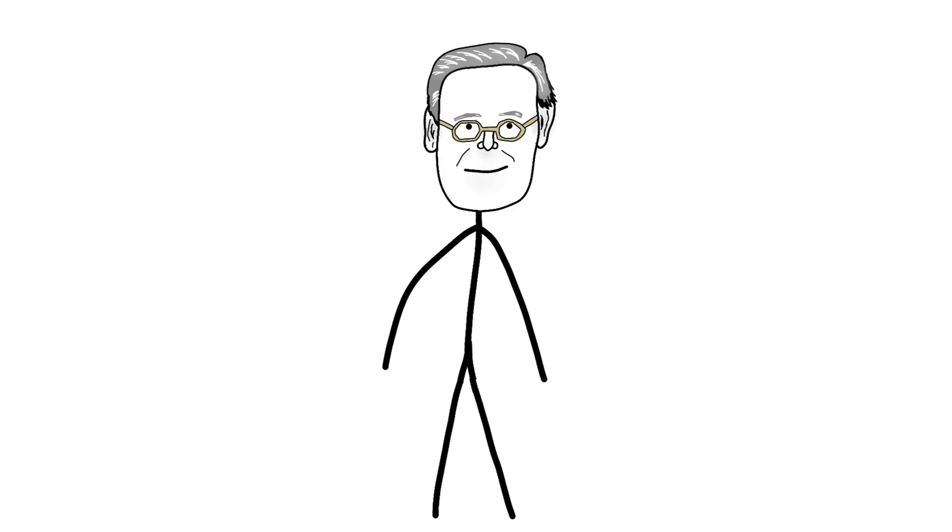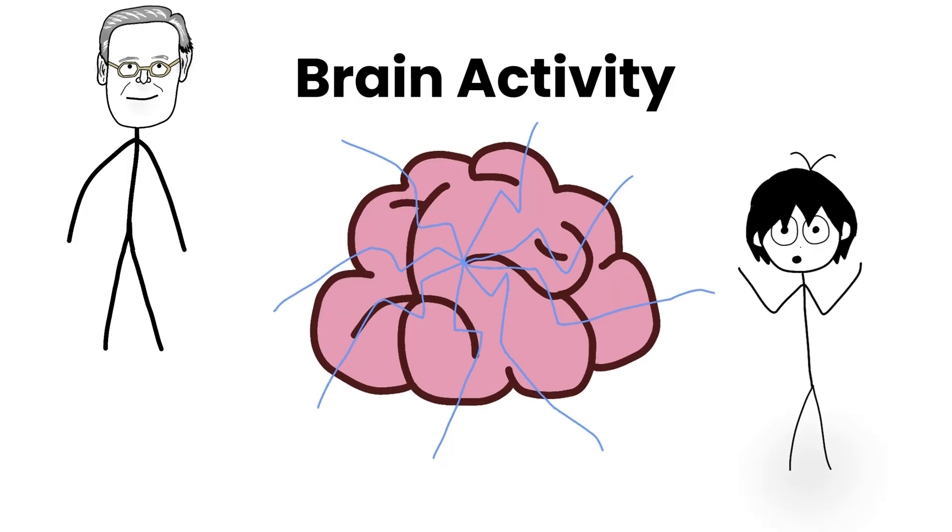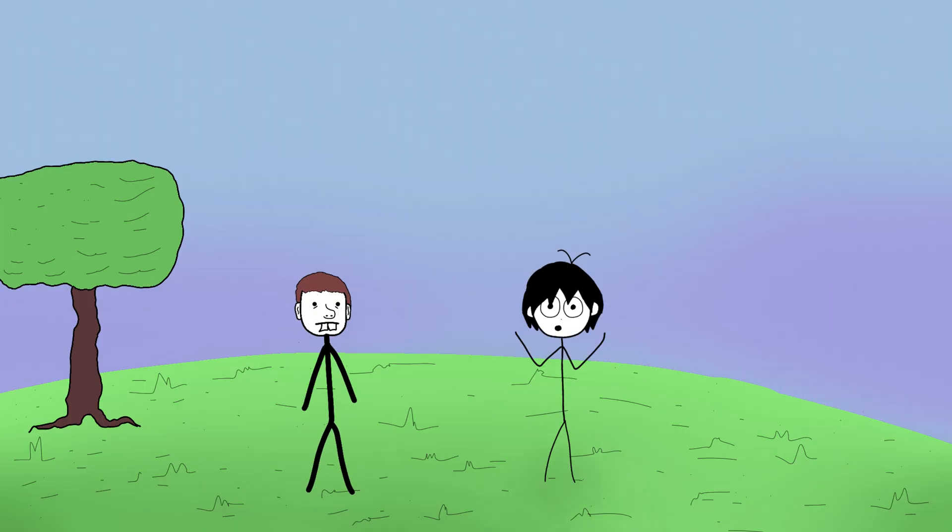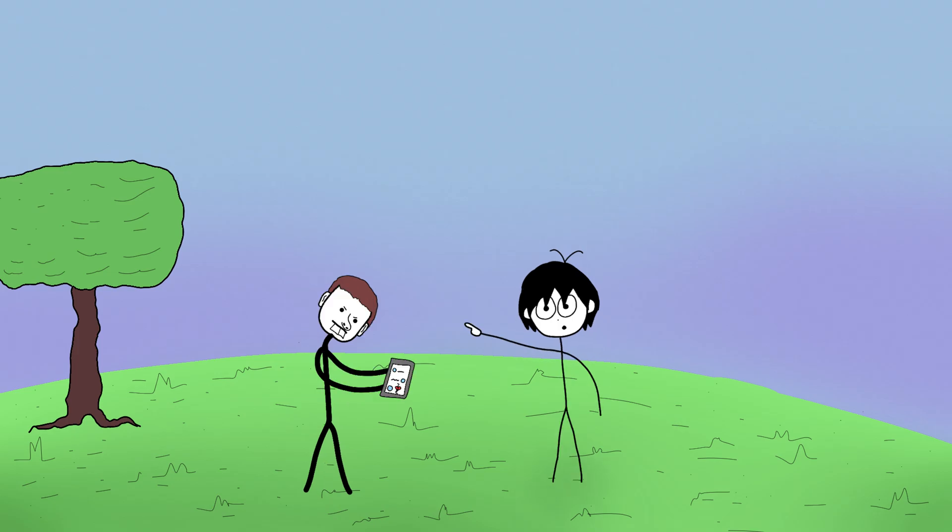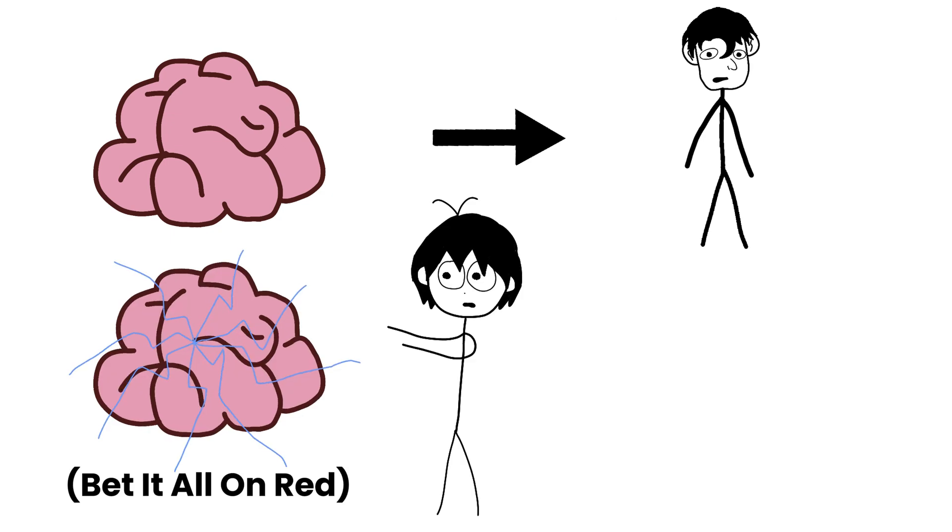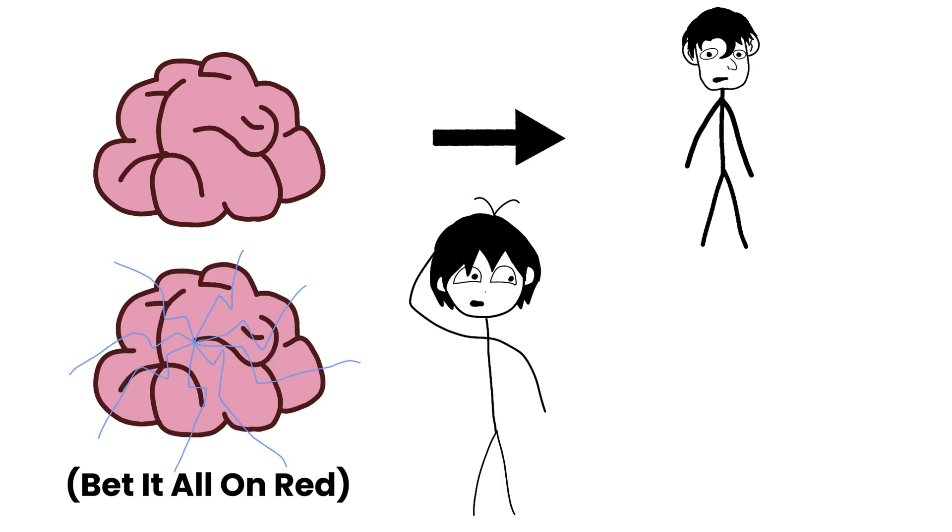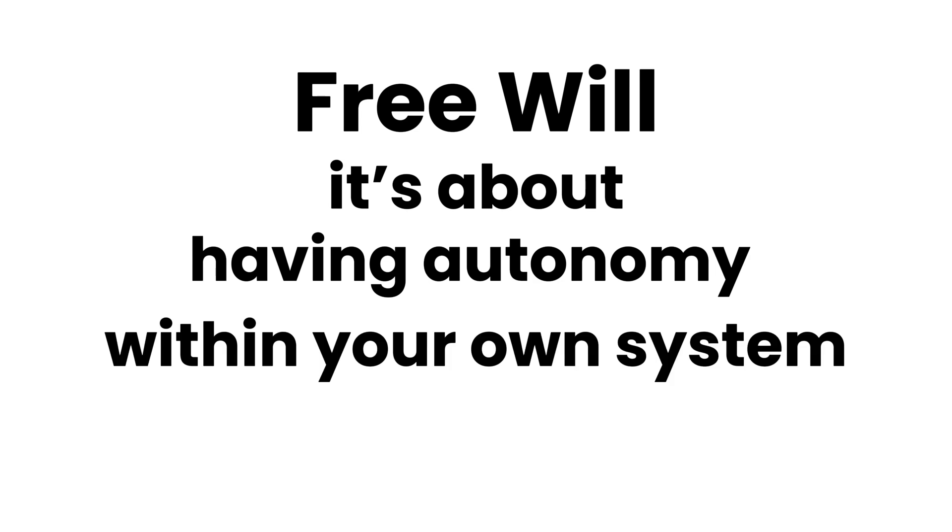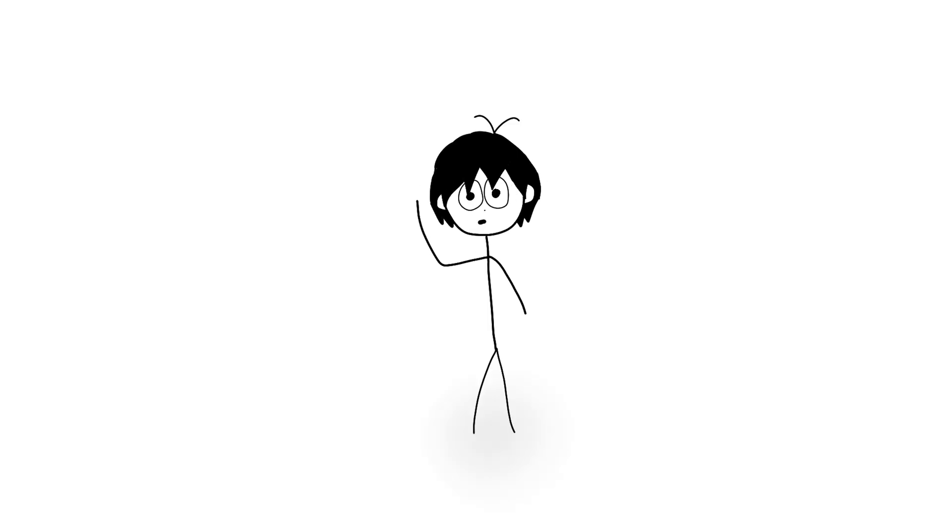First, Libet's experiment only showed brain activity before simple motor actions, like moving your wrist. That doesn't prove you don't have control over complex decisions like texting your ex. Second, your brain is part of you. If your brain decides before you, guess what? It's still you making the decision. Free will isn't spontaneous randomness. It's about having autonomy within your own system. And honestly, we don't even fully agree on what free will really means.